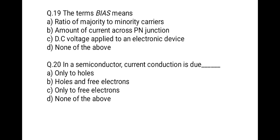The next question: the term bias means what? The correct option is DC voltage applied to an electronic device. When we apply biasing, it means DC voltage is applied to a device. When we connect DC voltage in forward bias to a PN junction it conducts, and in reverse bias it does not conduct. There are two types of biasing — forward and reverse — so biasing means DC voltage applied.